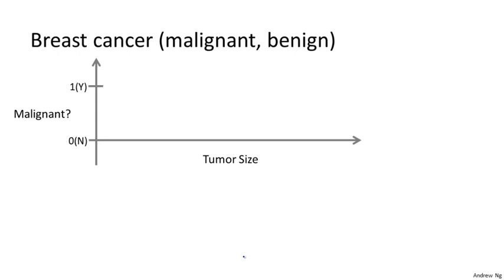Let's say you collect a dataset, and suppose in your dataset, you have on your horizontal axis the size of the tumor, and on the vertical axis I'm going to plot 1 or 0, yes or no, whether or not these are examples of tumors we've seen before are malignant, which is 1, or 0, not malignant, or benign.